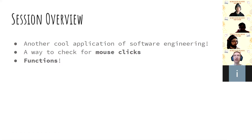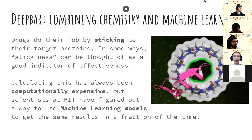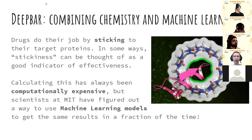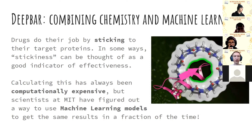Before we get started, we do have a poll question. We're going to talk about a cool application of software engineering. There is a tool called DeepBar. This is in the area of chemistry, and they're using what's called machine learning to help with chemistry.